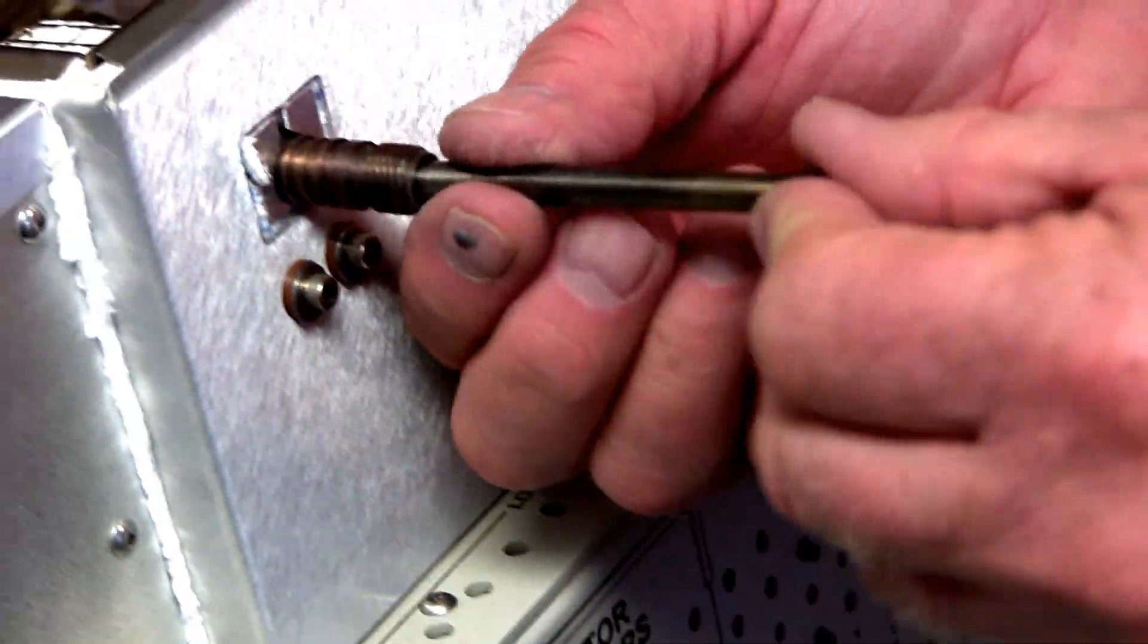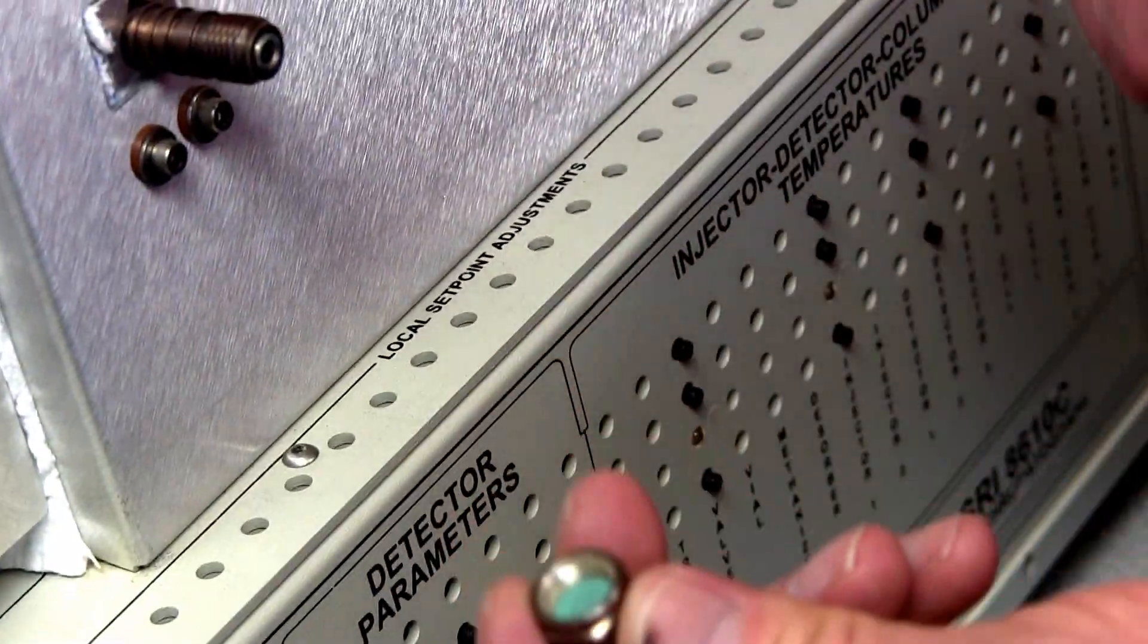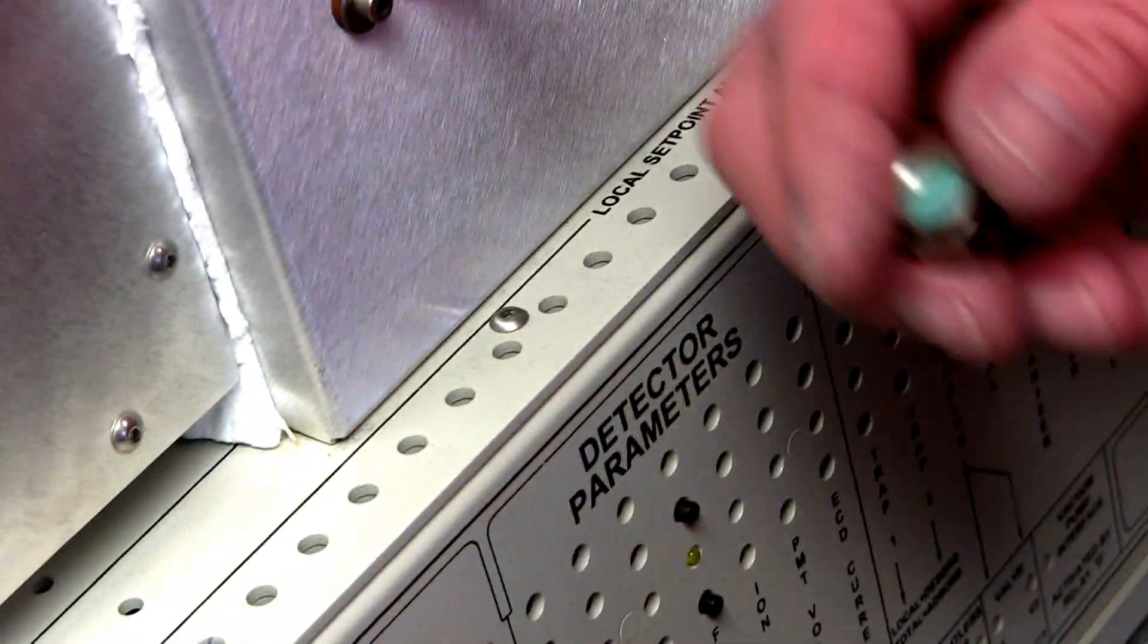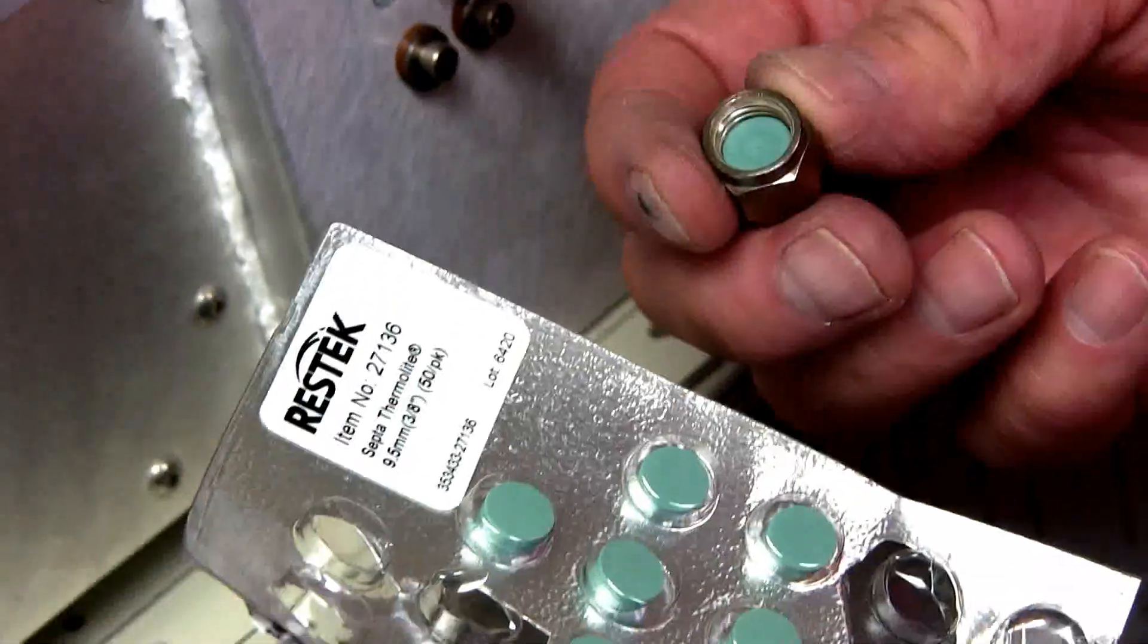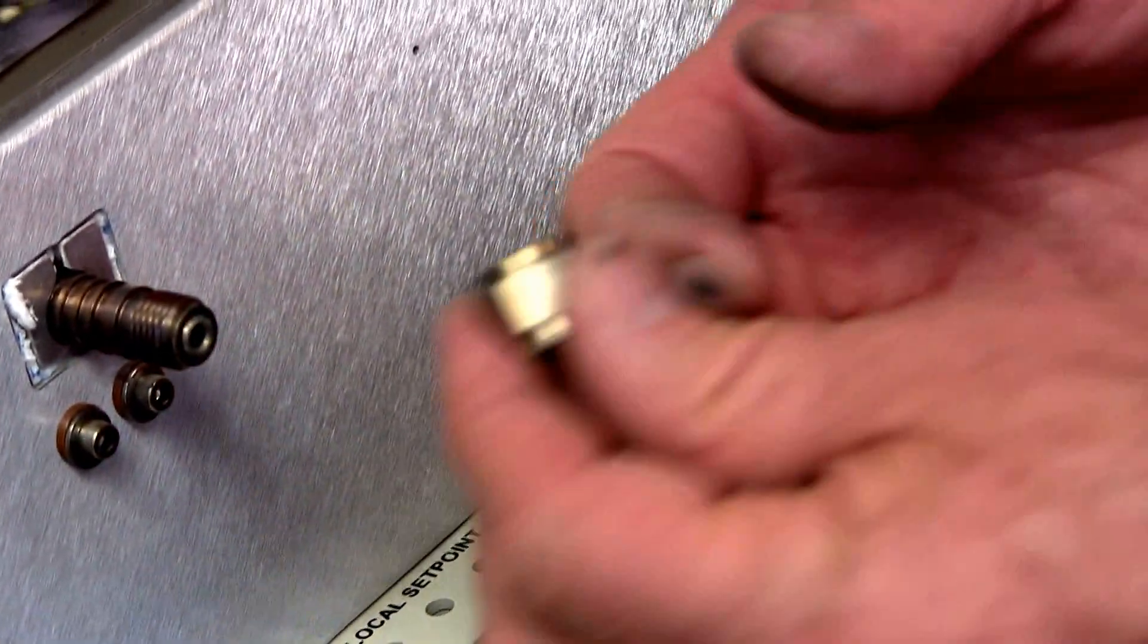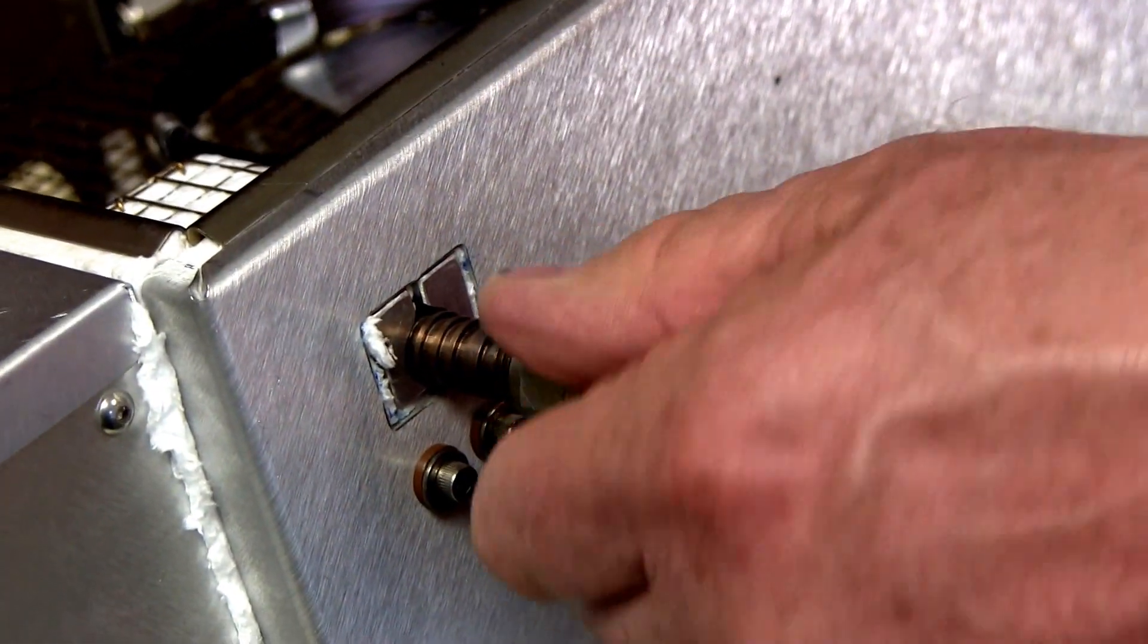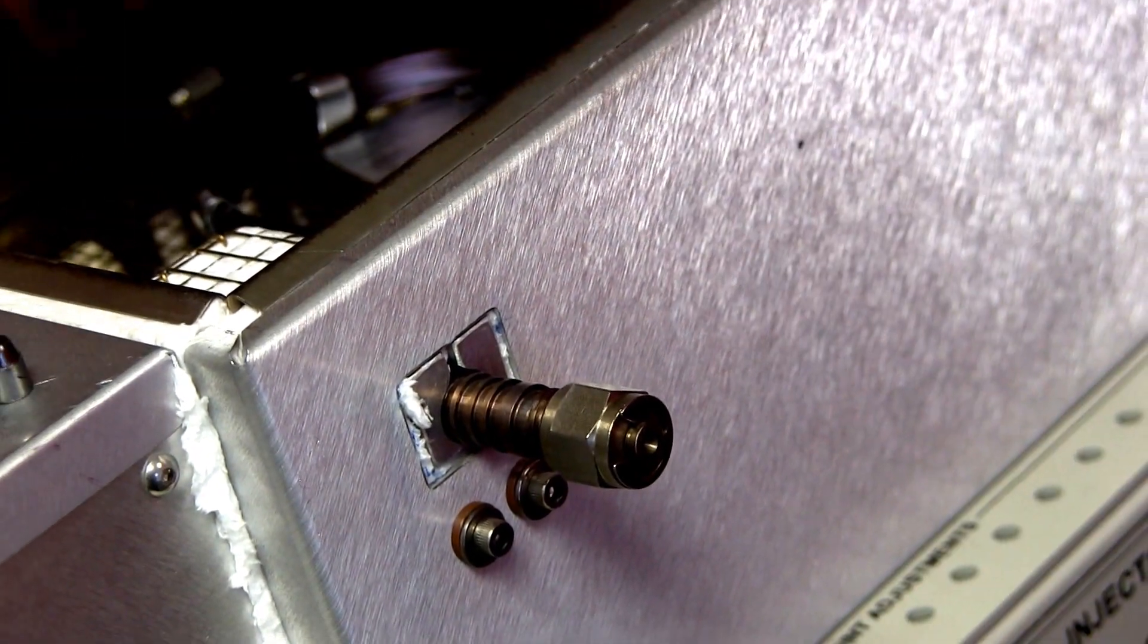Then the liner goes back in with the little hole pointing toward the outside. It's probably a good idea to put in a new rubber septum. This is what they look like when you buy them. They're about a dollar a piece. 9.5 millimeter green septa from Restek is what we use. And then tighten it up finger tight. And we're done on the injector side.